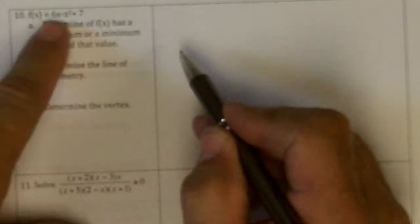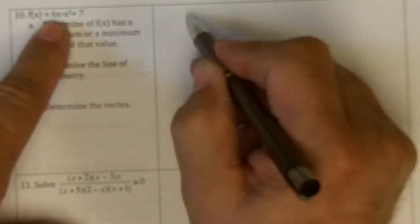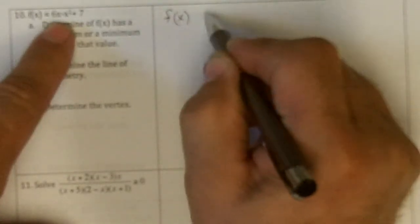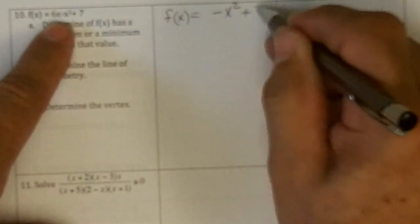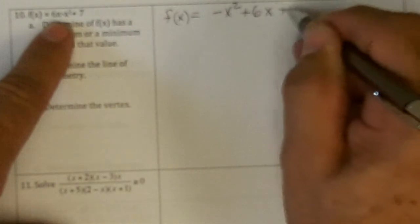Okay, page 4 of the sample final. So I have, I'll write f of x in order here. I have negative x squared plus 6x plus 7.